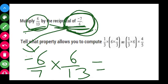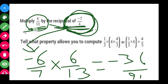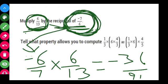Multiplying 6 upon 13 by minus 6 upon 7: 6 times 6 equals 36, and 7 times 13 equals 91. Therefore the result is minus 36 upon 91.